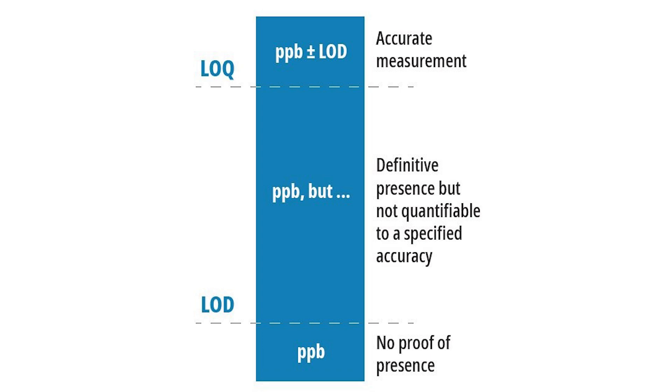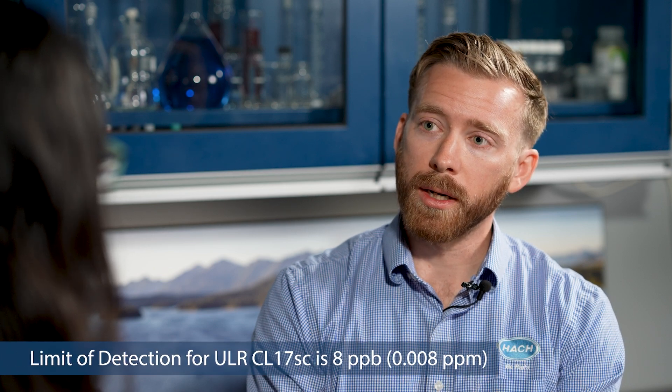When we think about dechlorination and ultra-low range chlorine measurement, this is really important for two reasons. One is for customers trying to completely remove chlorine from the system, the LOD is a really important number. The lower that limit of detection is, the closer you can come with confidence that your chlorine — or absence of chlorine — is below that number. So if your limit of detection is 8 and you're measuring 0, you're confident that your chlorine concentration is below that.